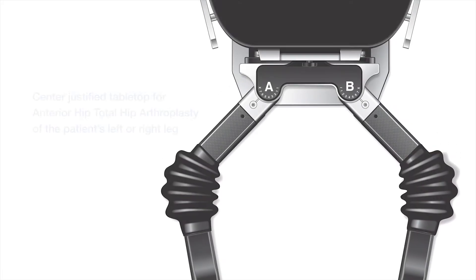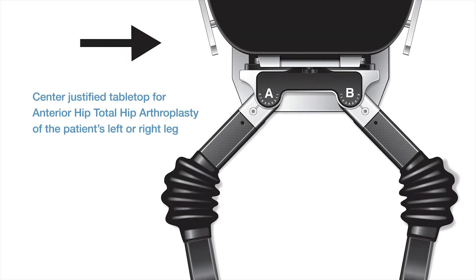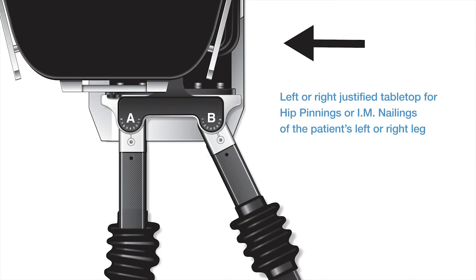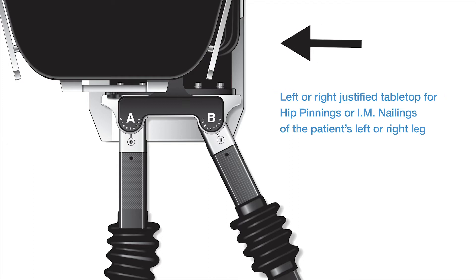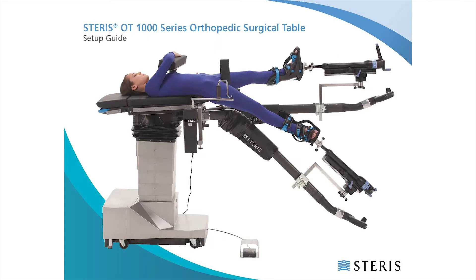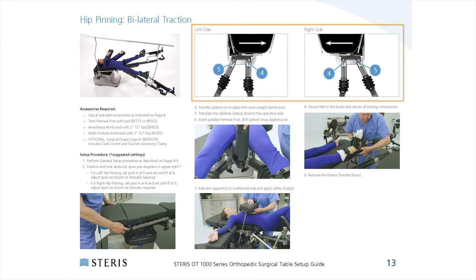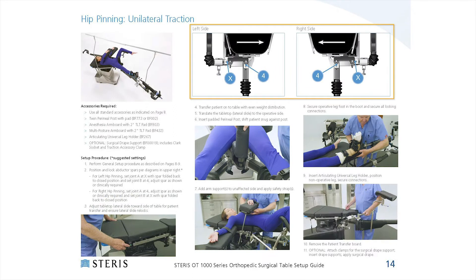The centered position is typical for anterior hip cases, whereas left justified or right justified positions are typical for an operative left or right leg fracture or trauma procedure, such as hip pinnings or IM nailings. Refer to pages 8 to 21 of the OT Table Setup Guide to verify the appropriate tabletop slide position shown in the illustrations.